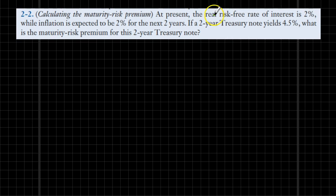We are told about the real risk-free rate which is currently set at 2%, inflation at 2% for the next two years, and assuming a two-year Treasury note has a nominal interest rate of 4.5%, what would be the maturity risk premium for that two-year Treasury note?